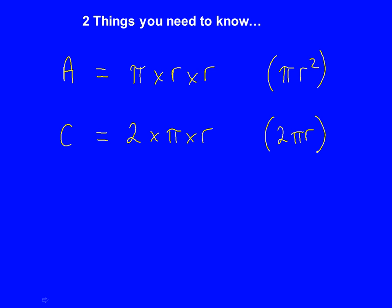These two formulas are not going to be given to you in the exam, so you will need to remember them. We need to know what pi is. Pi is just a number, 3.14 — it's also a button on the calculator that you can just press instead of typing in 3.14. And r stands for radius and is the distance from the centre to the edge of a circle.